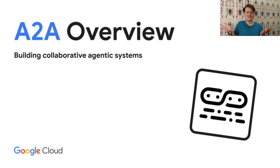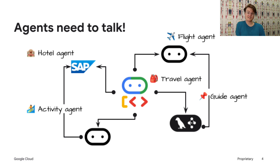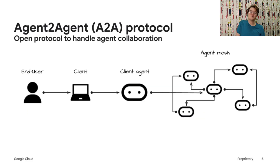First off, what is A2A and why is it useful? AI agents are popping up everywhere from lots of different companies and using all sorts of different frameworks, but how do we get them to work together on complex problems? Imagine planning a trip — you'd ideally want a flight agent, a hotel agent, and an activity agent to coordinate, but it's a lot of work to build every single one of these. You might want to use someone else's agent for some of these tasks, but you have no idea how it's implemented or how it works — it's completely opaque to you. The world needs a standard way for all these agents to communicate and collaborate.